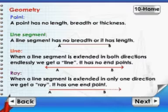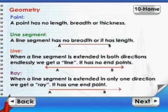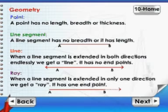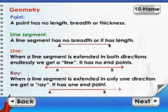Line: When a line segment is extended in both directions endlessly, we get a line. It has no end points. Ray: When a line segment is extended in only one direction, we get a ray. It has one end point.